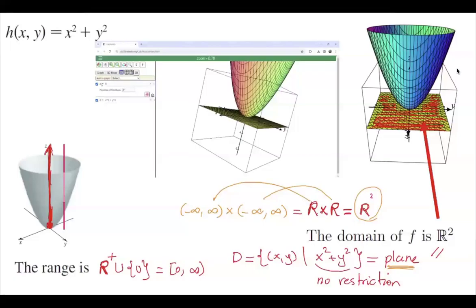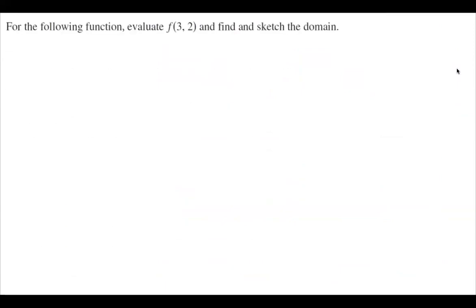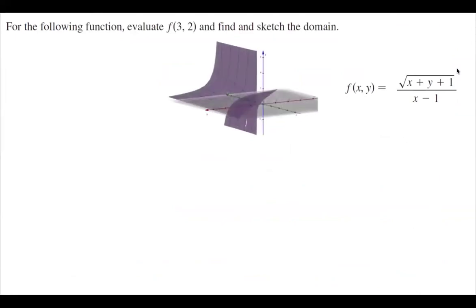Now that we introduce a two-variable function, let's go over more examples. We just did the paraboloid. Now let's take a look at the following function: f of x and y is equal to the square root of x plus y plus 1, divided by x minus 1. This is the graph of this object in 3D.